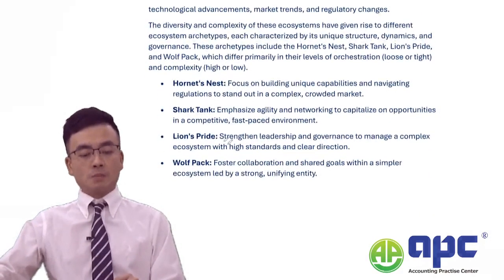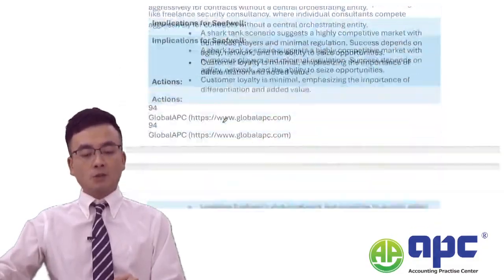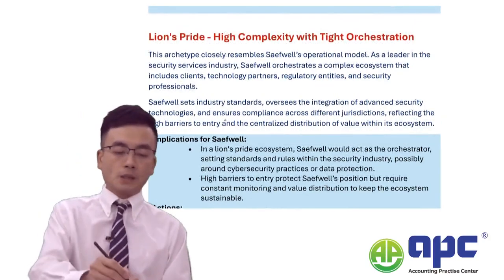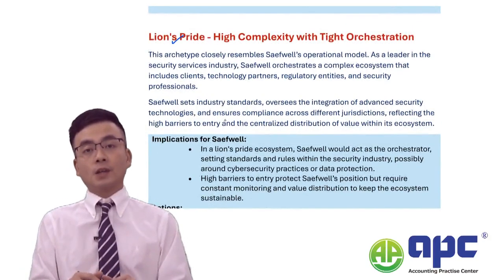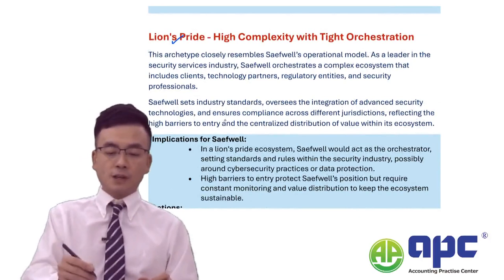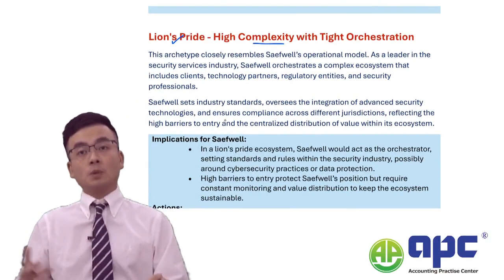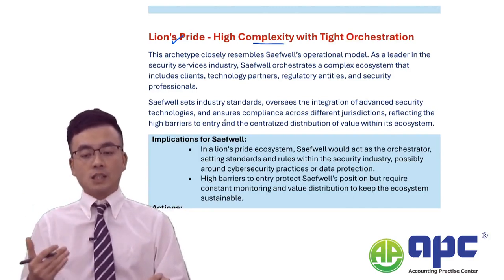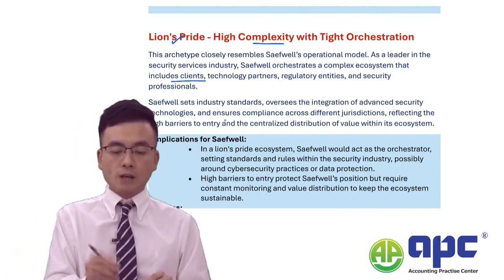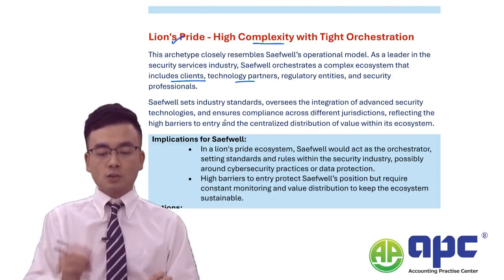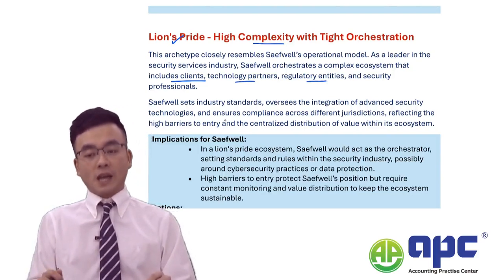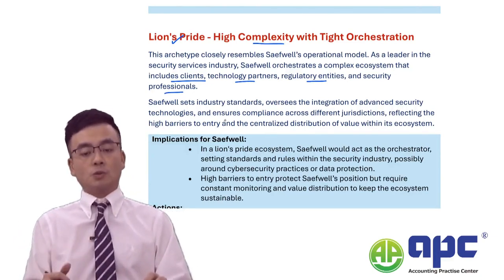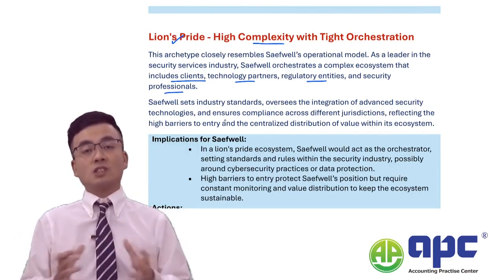According to the ecosystem model, there are four types. The most applicable type for the Safeway company would be the Lion's Pride, because the industry itself is relatively complicated — lots of competition, high barriers to entry, a variety of clients, technology partners, dealing with lots of regulatory entities and working with lots of security professionals.